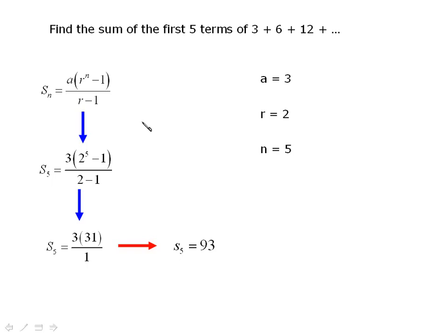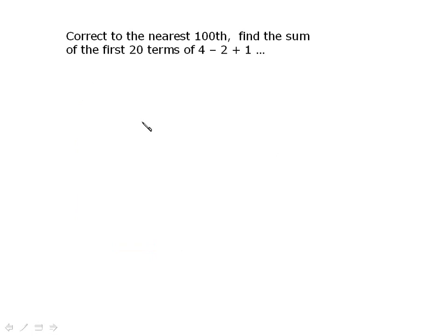Now, they're not all that straightforward. And these ones tend to be solved with the calculator in mind. So, here we get to the nearest 100th. We want to get the sum of the first 20 terms for 4 minus 2 plus 1, etc. So, here's our formula: A R N minus 1 over R minus 1. Take note of what we have. A is equal to 4. Your common ratio, if you divided out the T2 by T1, you'd get negative 1 half or negative 0.5. I'm going to decimalize it because it's going to go into my calculator like that.